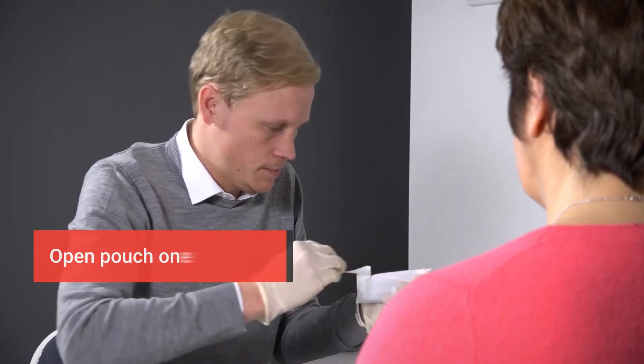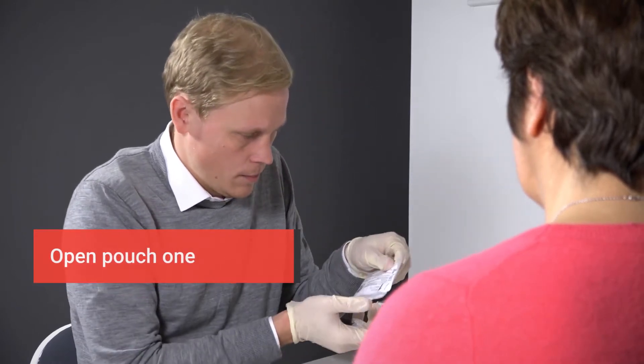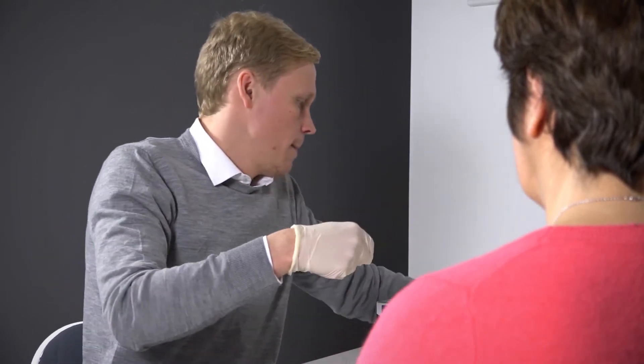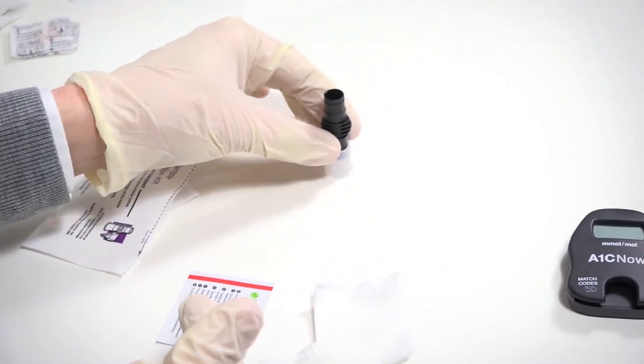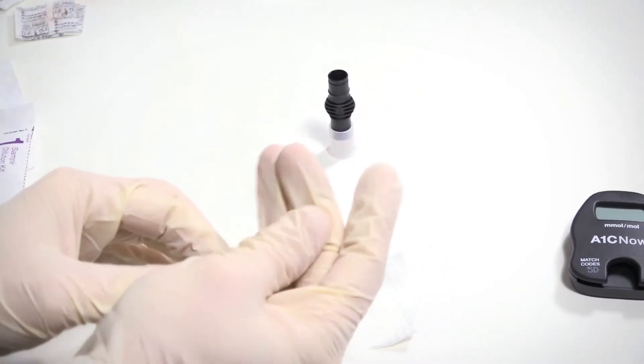Open pouch number one and stand the diluent bottle up, placing the blood collector on the table. Remember not to open pouch two until you have completed all the steps for pouch one.